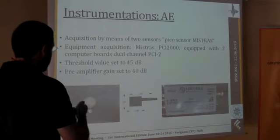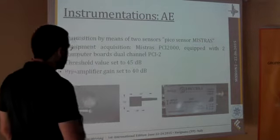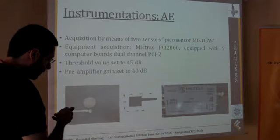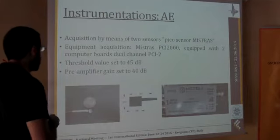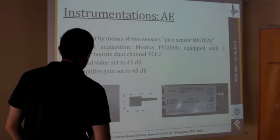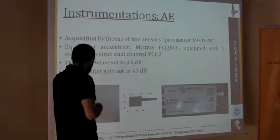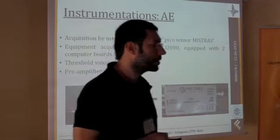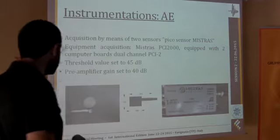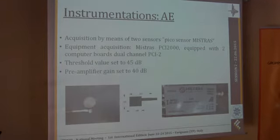Some words about the instrumentation, specifically what is the instrumentation we use in these experiments. The acquisition was made by two sensors, Pico sensors by Lister, they are very, very small, they are very easy to be placed on whatever samples, as you can see, these are the dimensions compared to one Eurocent.